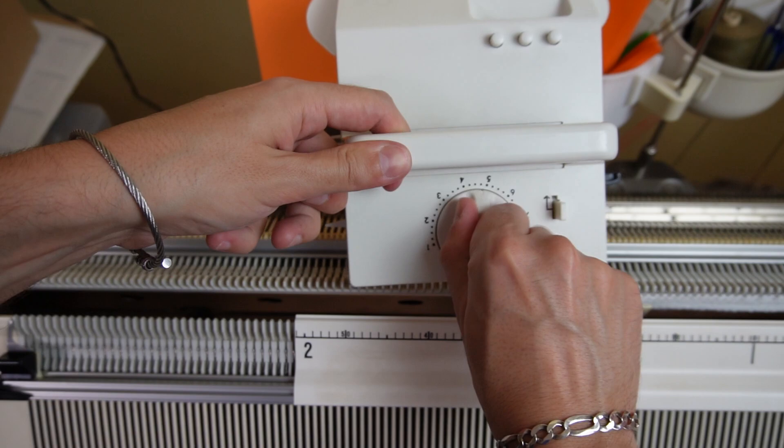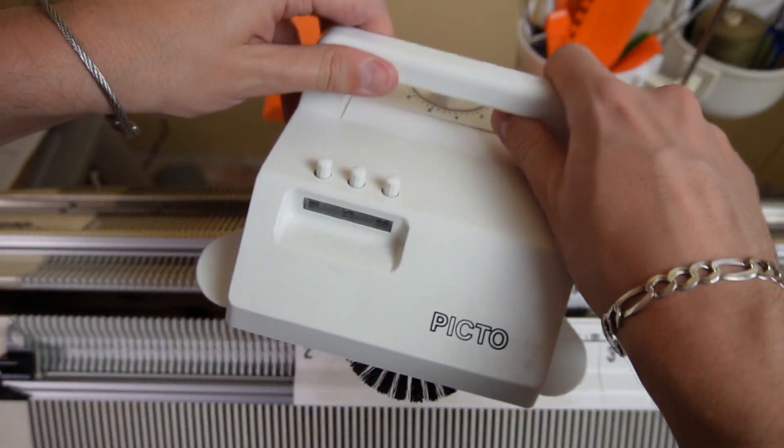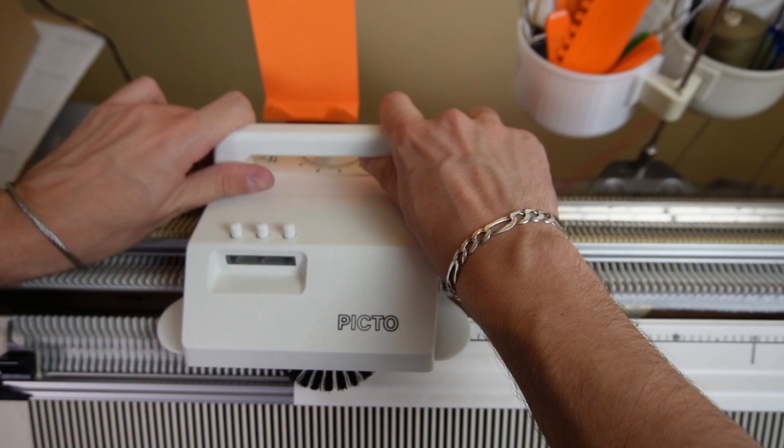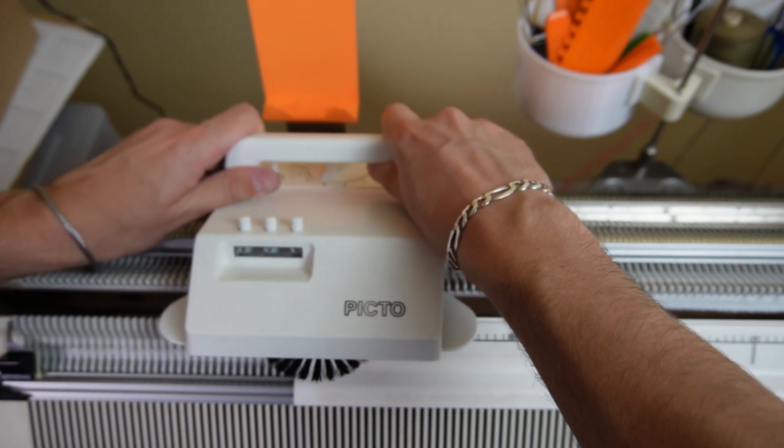Take the picto carriage and set the stitch size to the one you have used on the pass-up lock. In my case it was set to 5. Now pull the black levers and attach the picto carriage at left of the knitting.